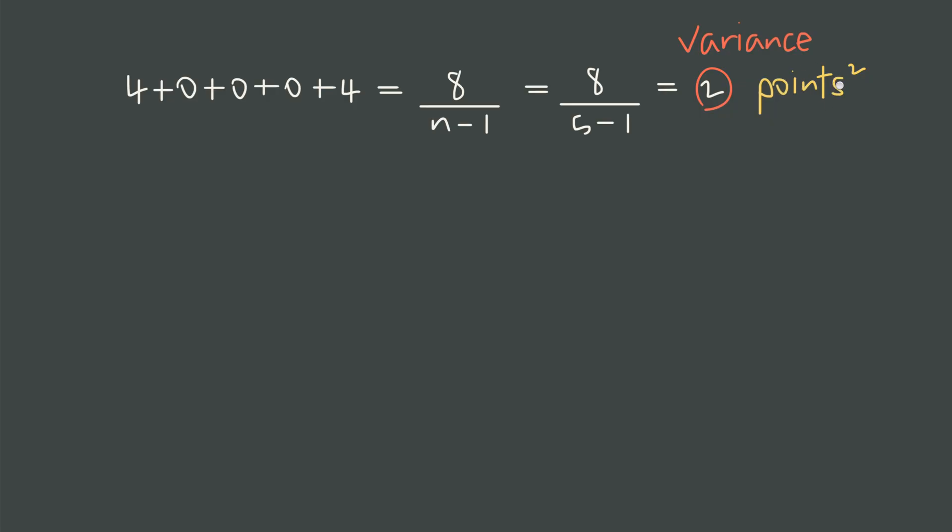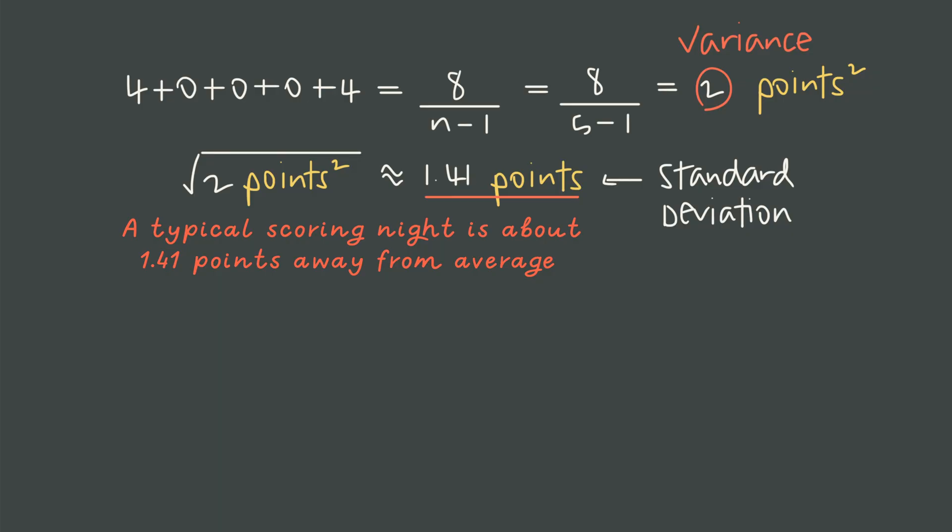We need to get back to our original units. To get back to those original units, to just points, we need to undo the squaring that we did earlier, which we can do simply by taking the square root. The square root of 2 is about 1.41. And the square root of points squared, as units, is just points. So taking the square root of the variance 2 points squared gives us 1.41 points. And this here is our standard deviation. This is the answer to our original question. It tells us that for player A, a typical score is about 1.41 points away from their average of 20. A small number here for standard deviation means high consistency.